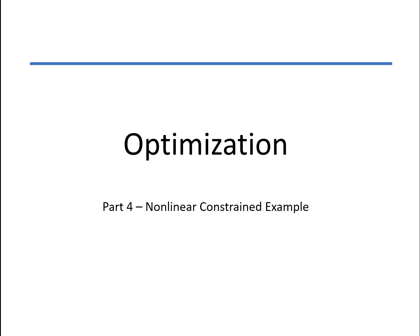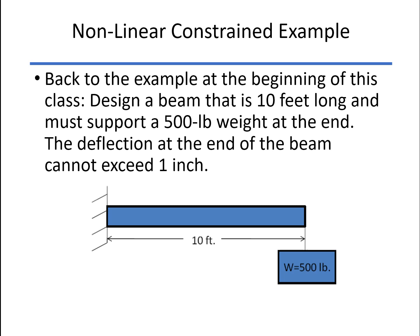We'll start out with the one that we used to introduce the optimization topic altogether. We're trying to design a beam that's 10 feet long, has to support 500 pounds on the end, and it can only deflect one inch.